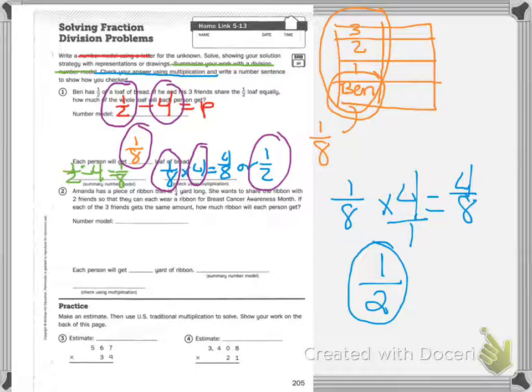Remember, first is your number model. Two, you're drawing a picture and answering. Three - I wrote it in the wrong spot - three is the summary model, which should be division. And four is check with multiplication.